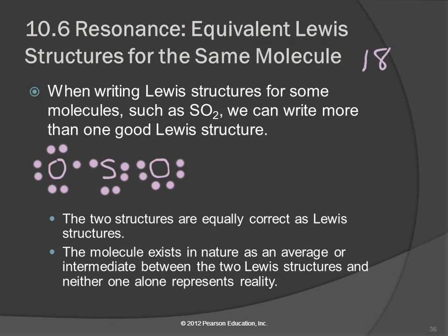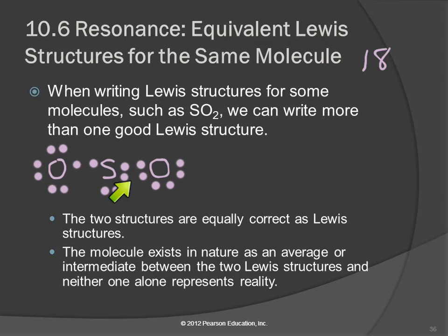But this isn't perfectly symmetrical, is it? We've got a double bond on one side and a single bond on the other side. Why is the double bond over there? Why isn't it over here? Well, we could draw it the other way too — sulfur in the middle, with the double bond on the other oxygen and the single bond on this side.